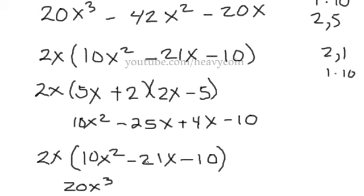2x times the negative 21x. That will be 42x squared. And the 2x times the minus 10 is negative 20x. So yes, this up here would be the complete factored of our original trinomial.